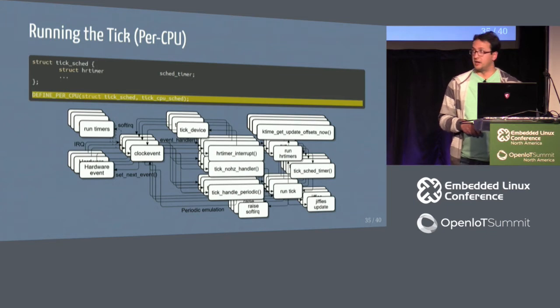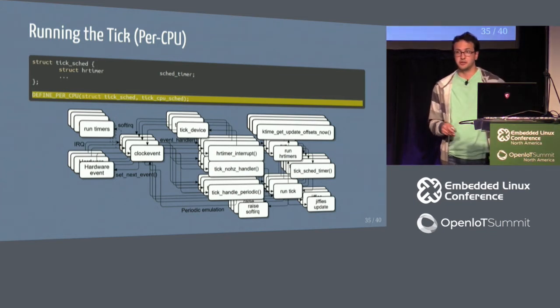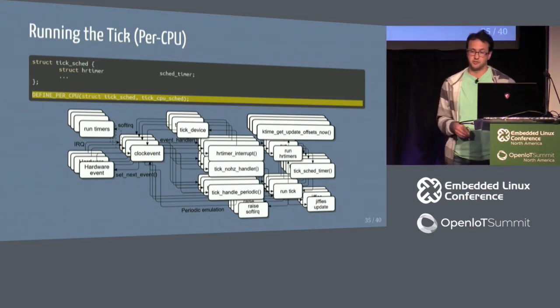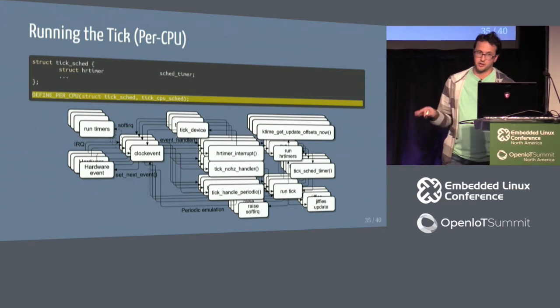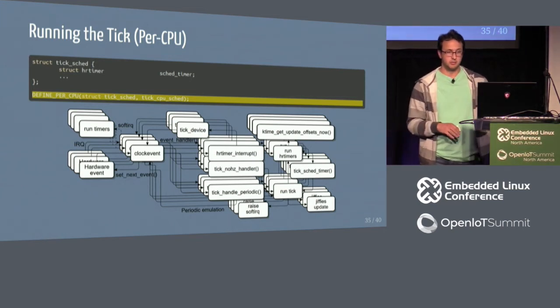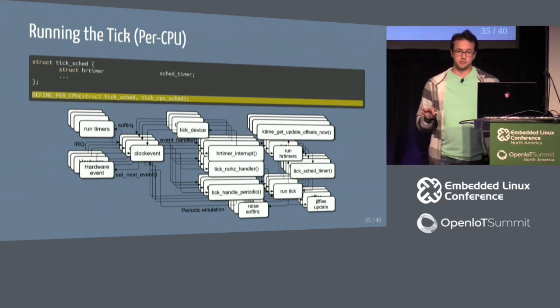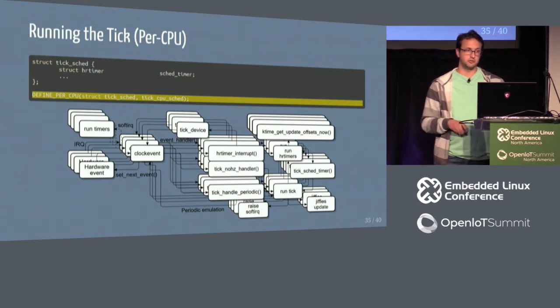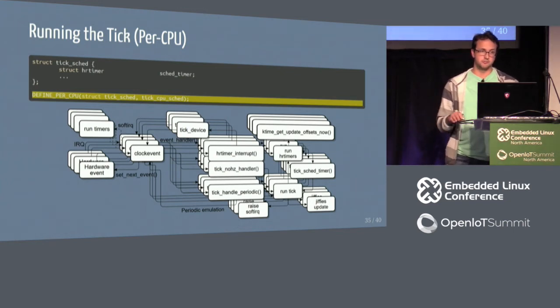When running per-CPU, we duplicate this — if you have four CPUs, we're doing this four times for every CPU, calling all these paths the same way. That's why we have a per-CPU structure for the tick_sched structure.